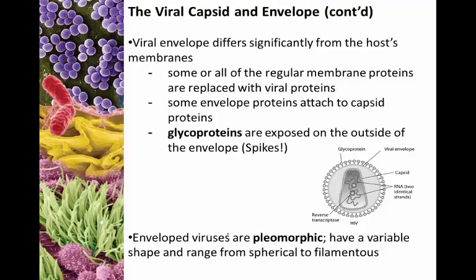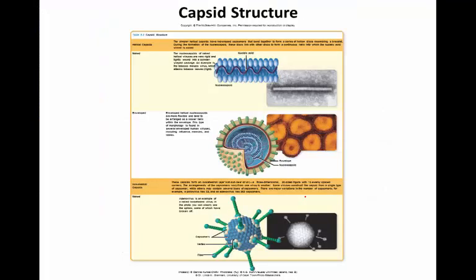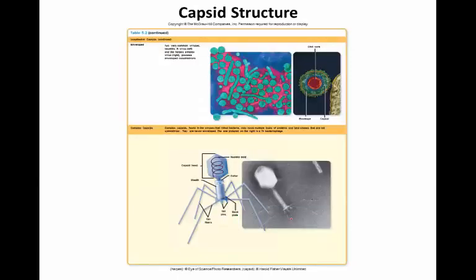The viral envelope will be very different from the host cell membrane - the virus modifies it before coating itself. Some or all of the regular membrane proteins are replaced with viral proteins; some envelope proteins are made to attach to the capsid so the envelope and capsid are attached to one another. Spikes, which are glycoproteins, will be added to the outside of the envelope. Envelope viruses are pleomorphic - they have a variable shape ranging from spherical to filamentous, so they can look string-like or circular. There's no constant shape in an enveloped virus.